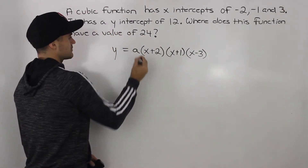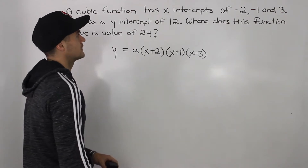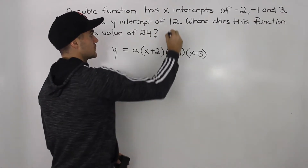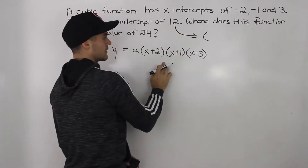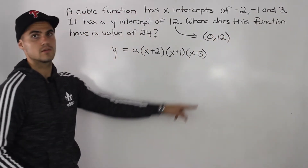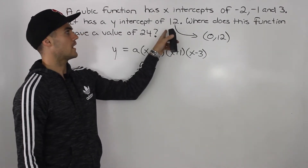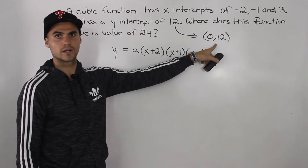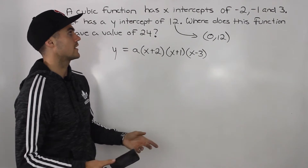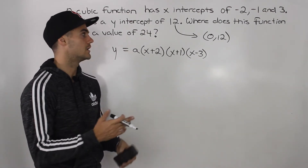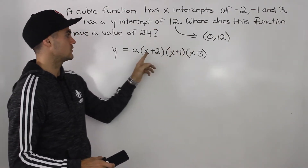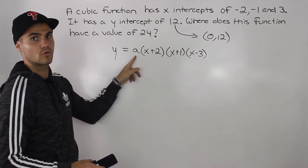There's also some constant 'a' — we don't know what it is yet. We are told this cubic function has a y-intercept of 12, so it goes through the point (0, 12). Sometimes they give you the y-intercept, sometimes they give you another coordinate directly. Either way, you take that coordinate and plug it in for x and y to solve for the 'a' value.